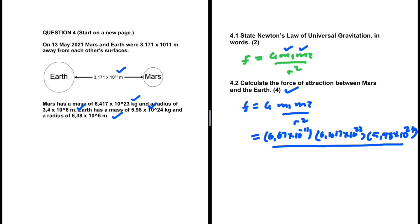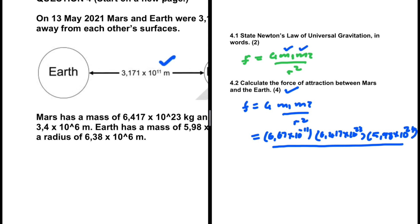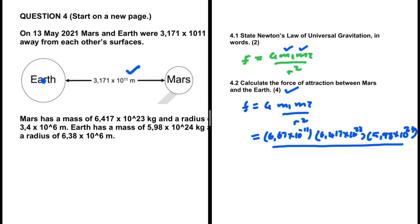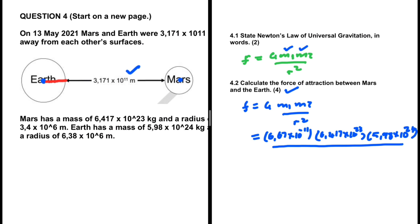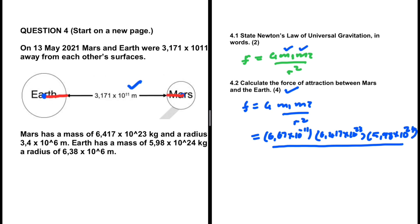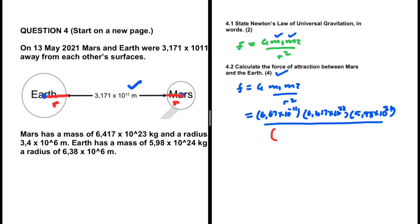R is the distance between the centers, but we are given the distance between their surfaces. If you substitute 3.171 times 10 to the power 11 meters directly, it is wrong because that is the surface-to-surface distance, not center-to-center. The center-to-center distance is the radius of Earth plus the surface-to-surface distance plus the radius of Mars.